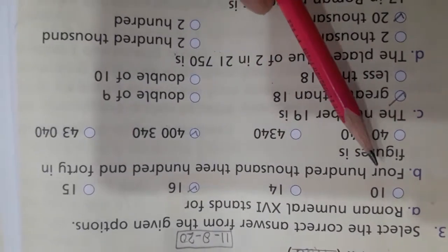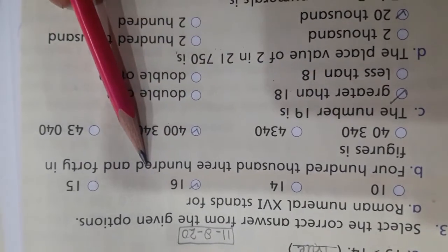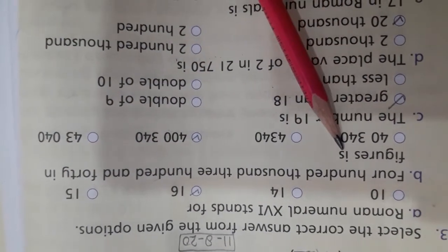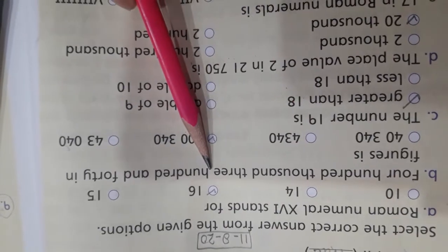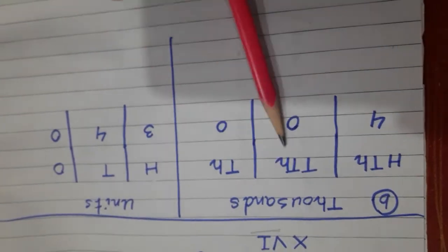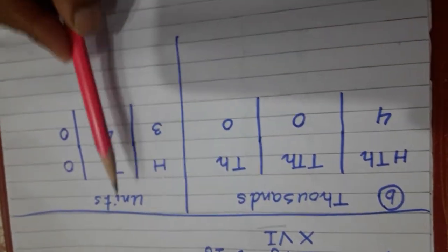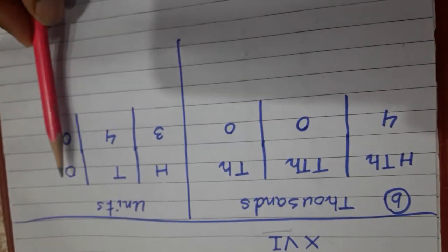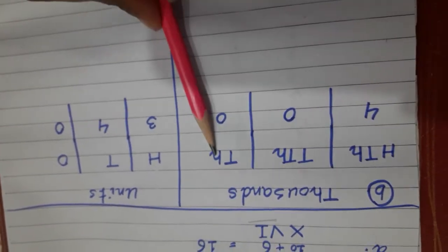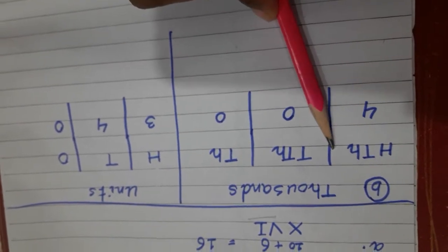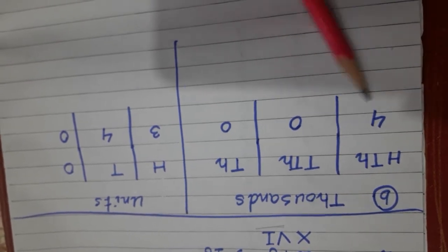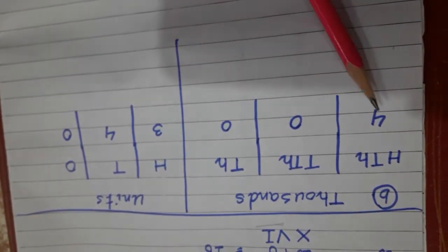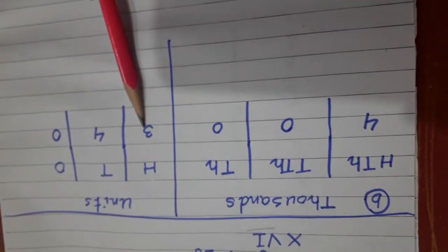Okay students, the next one is 400,340 in figure. They give us these options, so let's see — it has a different table. We will make this table: thousands, units, ones, tens, hundreds, ten thousands, and hundred thousands. Our number is four hundred thousand. So we will adjust it here: four hundred thousand, three hundred and forty.